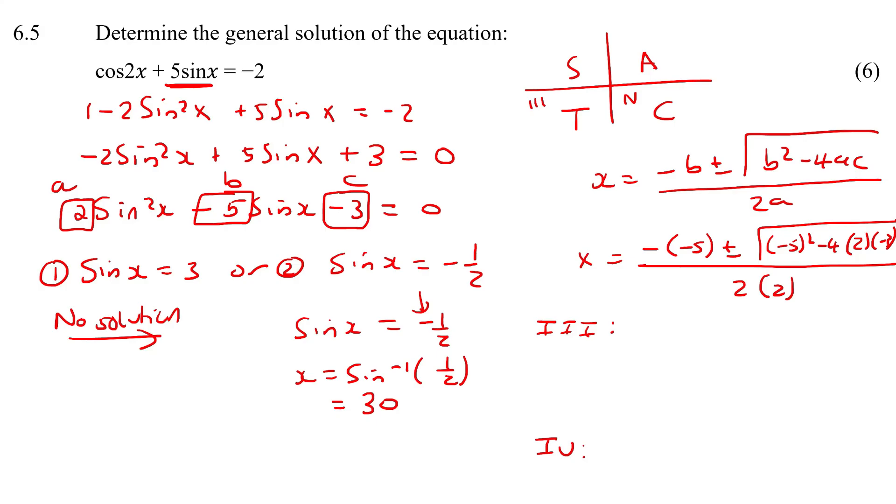So in quadrant 3, we're going to say x equals, now we know quadrant 3 is 180 plus the reference angle. Then you're going to say k360, k is an element of z. You can also use n or whatever your teacher does. That's going to give us 210 plus k360, k is an element of z.